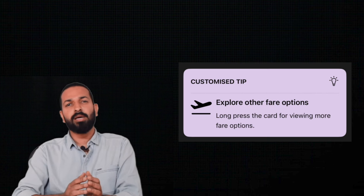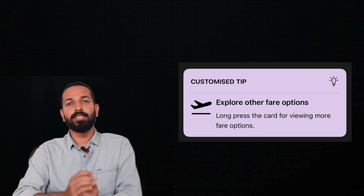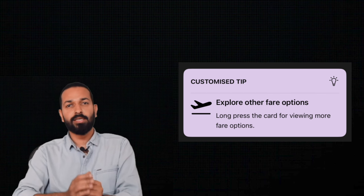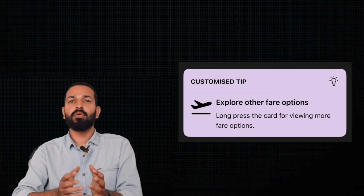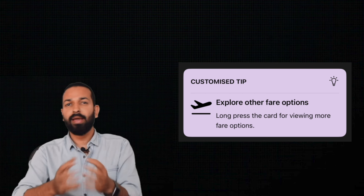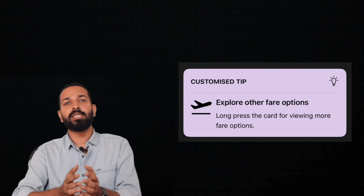Next — can we customize these tips? Yes, a lot of customizations are possible and all of them are very easy. The tip can be as simple as having just a title, or a good-looking view having a title, message, image, CTA, background color matching your app theme, positioning of the CTAs — a lot can be done. We'll see all this in a minute.